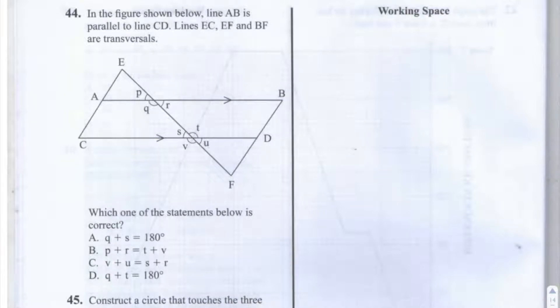This is question number 44 of the 2013 KCPE Math paper. It says, in the figure shown below, line AB is parallel to line CD. Lines EC, EF and BF are transversals.